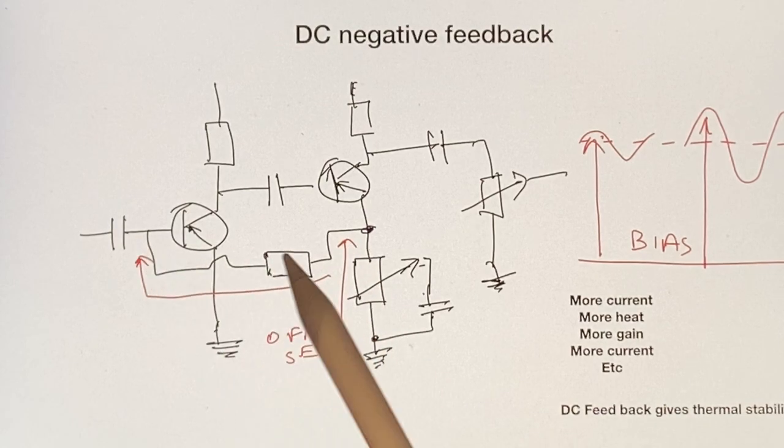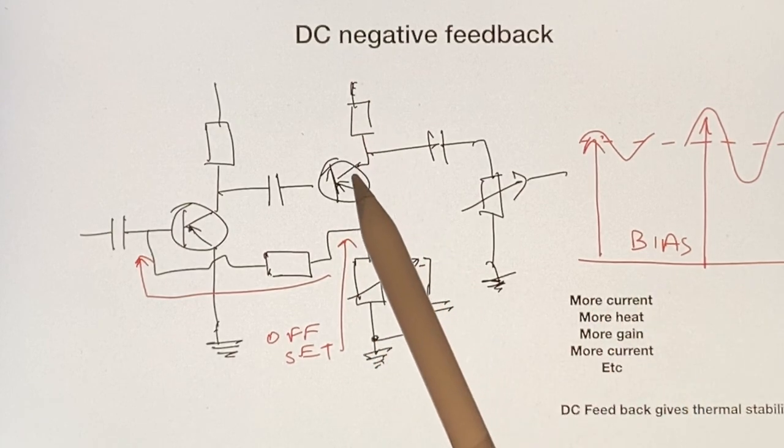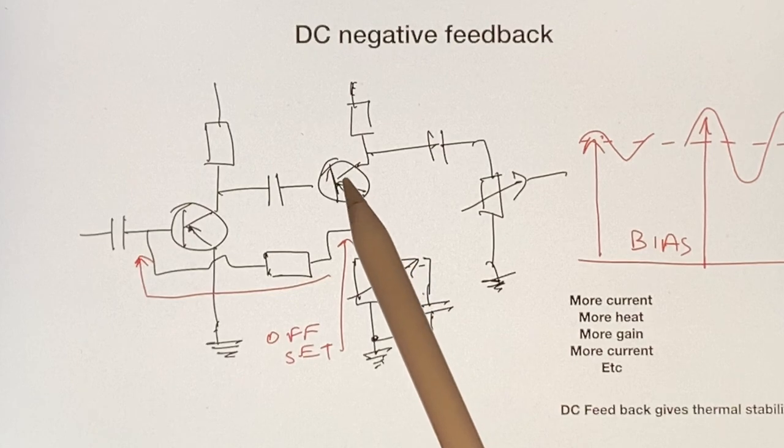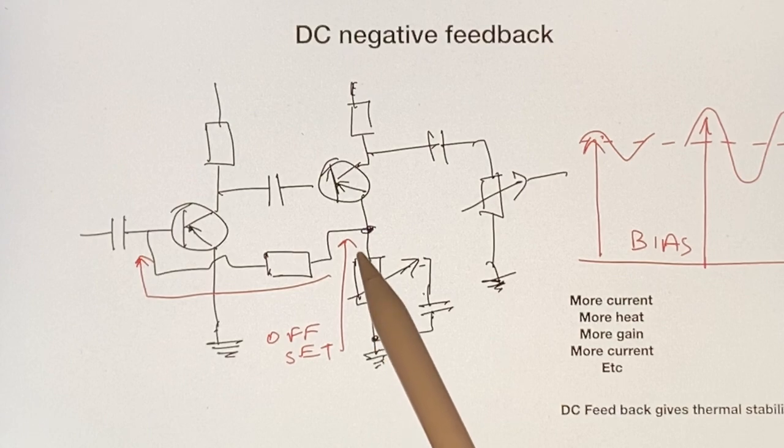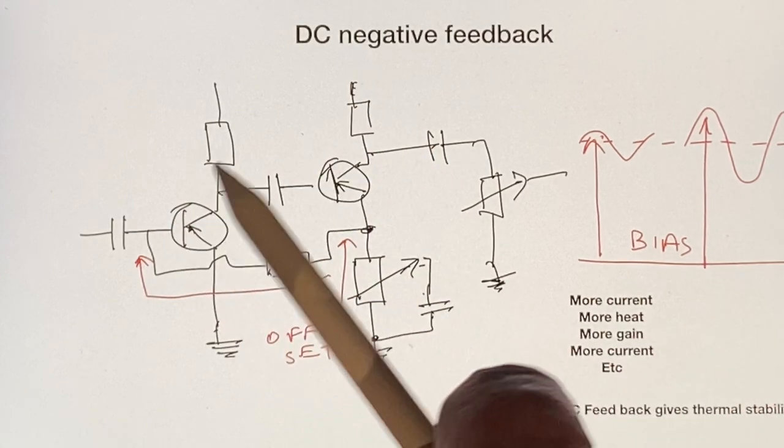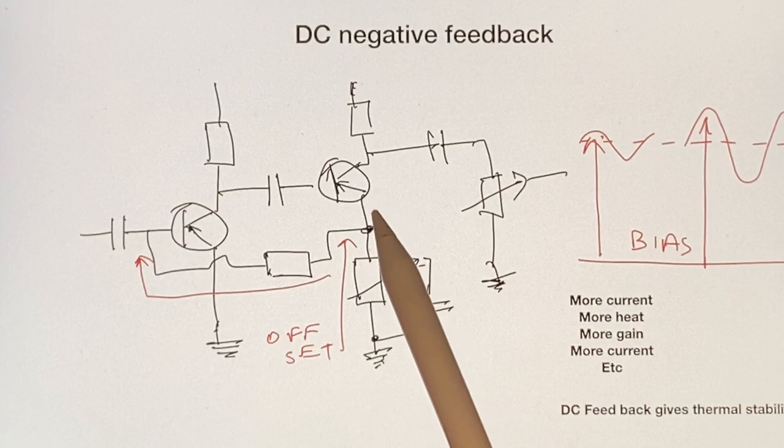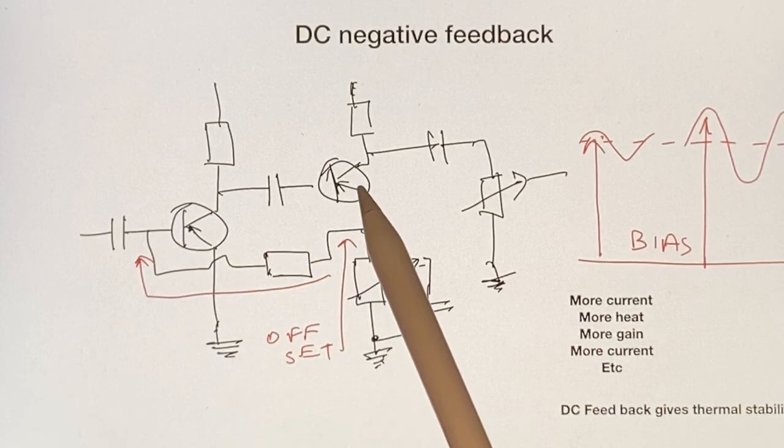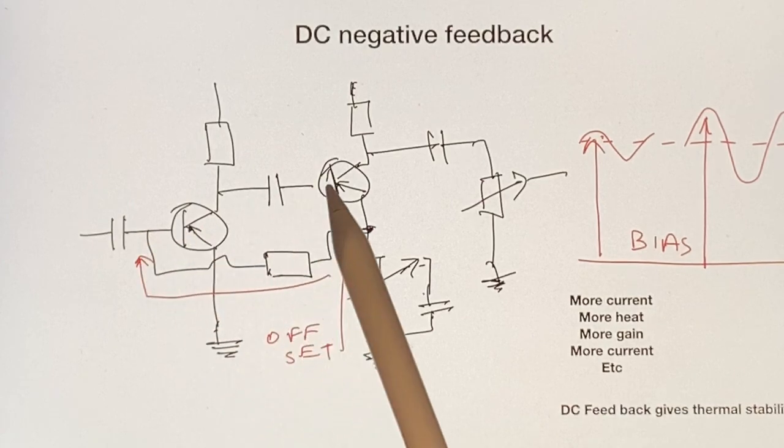What happens with the DC is if you have more current through this transistor, you get more heat. The more heat through that transistor - they are quite sensitive to heat - you'll get more gain, and if you get more gain you'll get more current through here. You can get what they call thermal runaway through these types of circuits with these types of transistors. What you need in that case is negative feedback of DC. If the current increases, then the input will actually reduce some of the gain going back into the circuit.